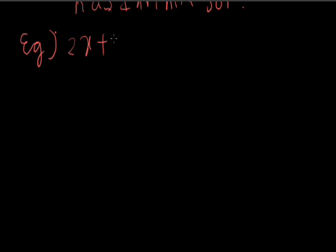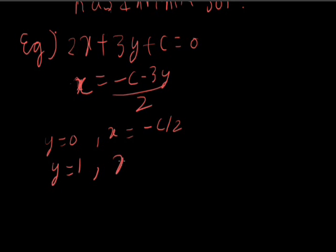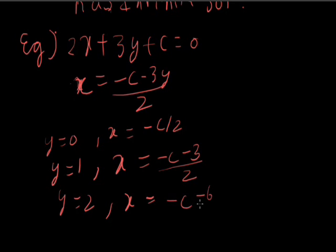For example, let's take a random equation: 2x plus 3y plus c equal to 0. We find the value of x: x equals minus c minus 3y, all over 2. When y equals 0, we get x equals minus c over 2. When y equals 1, x equals minus c minus 3, over 2. When y equals 2, x equals minus c minus 6, over 2. This proves that for every value of y there is a unique value of x, so this equation has infinite solutions.